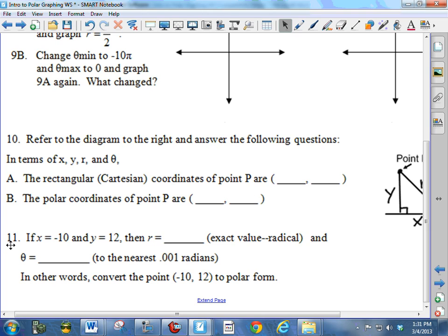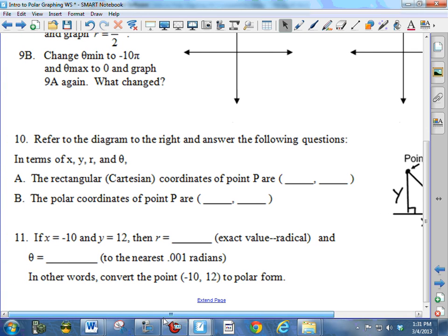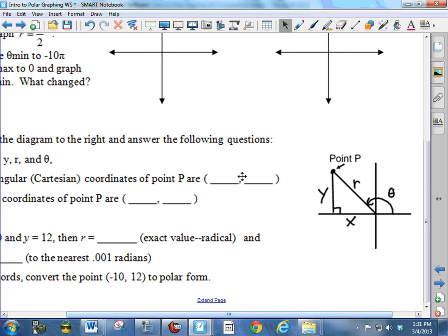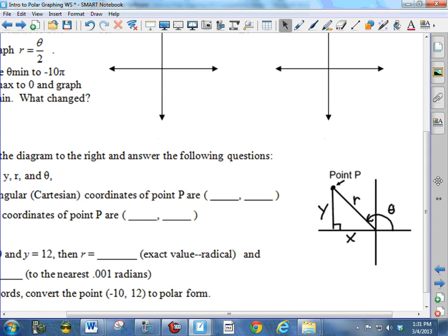Then number 11, I said, what if x was negative 10 and y is 12? And that would make sense for this particular quadrant two point. Then what would be r and what would be theta? So basically you're just converting to polar form, which is the same thing you did in the very first part of the worksheet. So that's what I'm looking for on that. Hopefully that is helpful to you and will help you with your homework. Thank you.